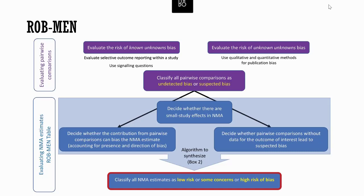In each pairwise comparison, we evaluate the risk of the known unknowns and the unknown unknowns, which are respectively what are commonly known as the selective outcome reporting bias and the publication bias. We then classify each pairwise comparison as having undetected bias or suspected bias, with the relevant direction of the bias.